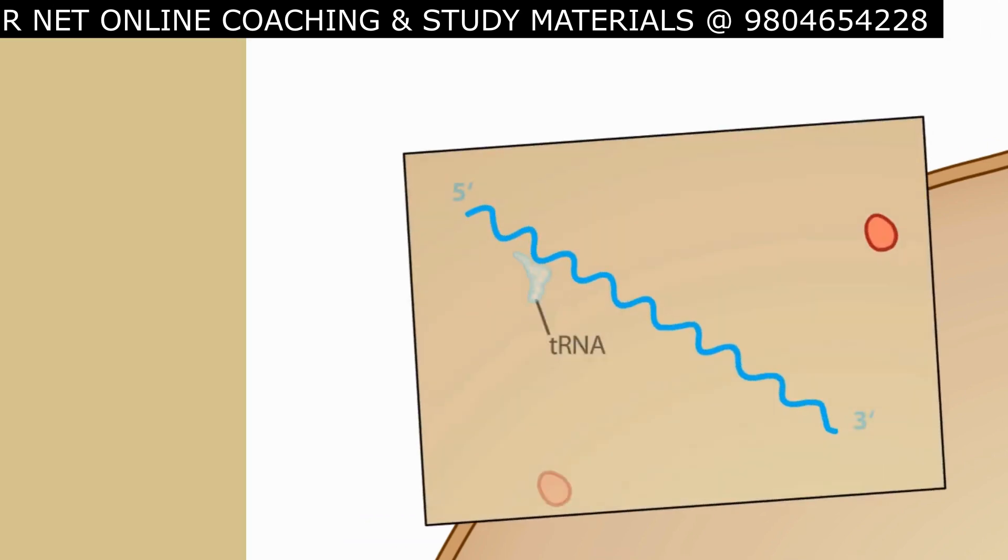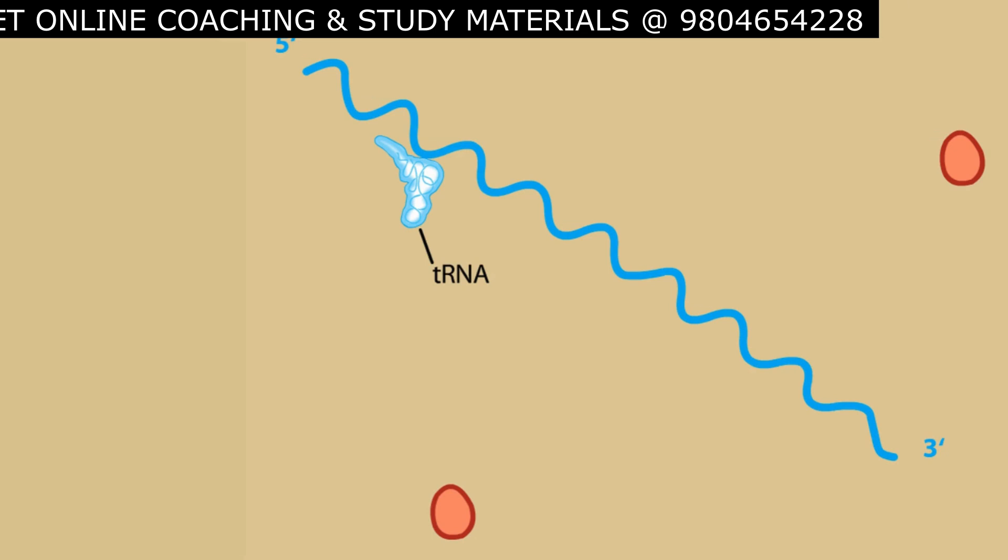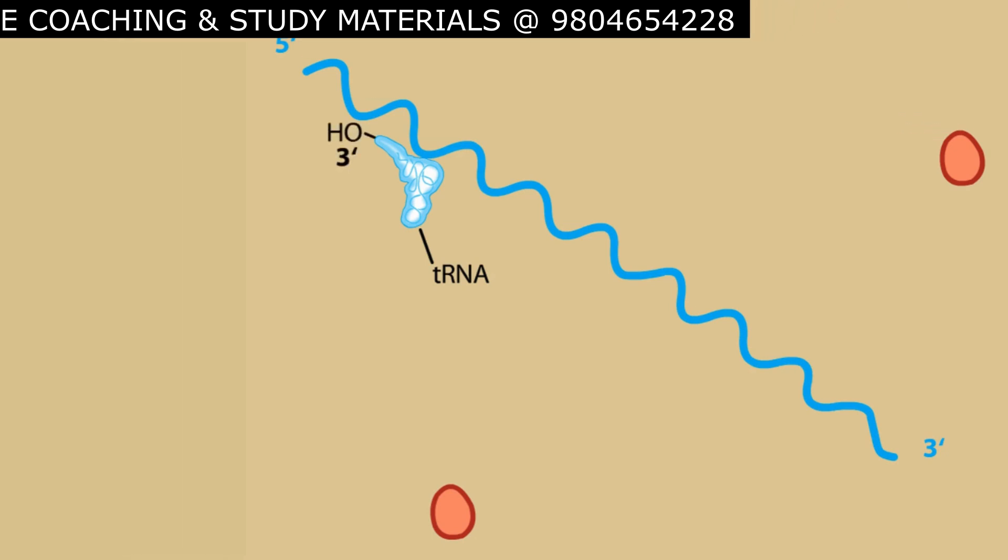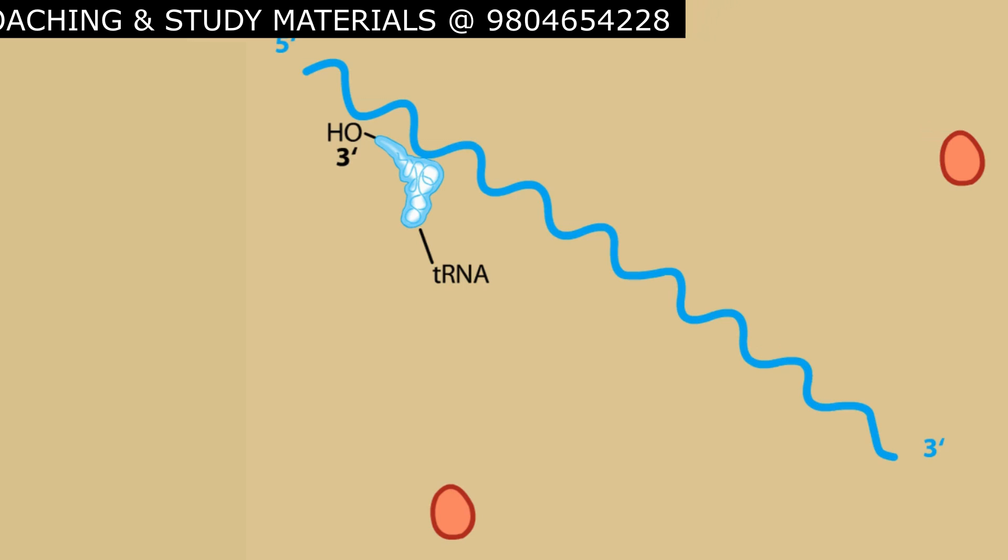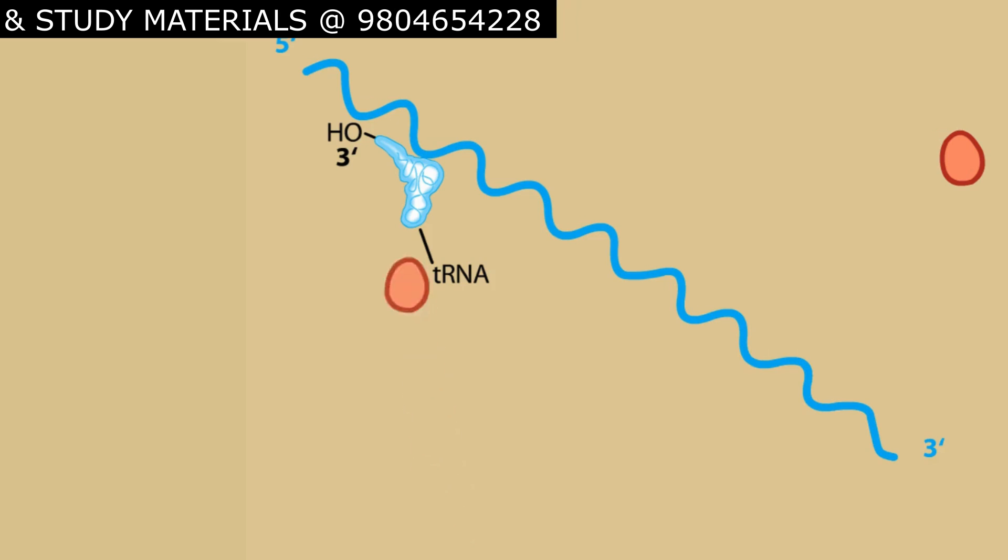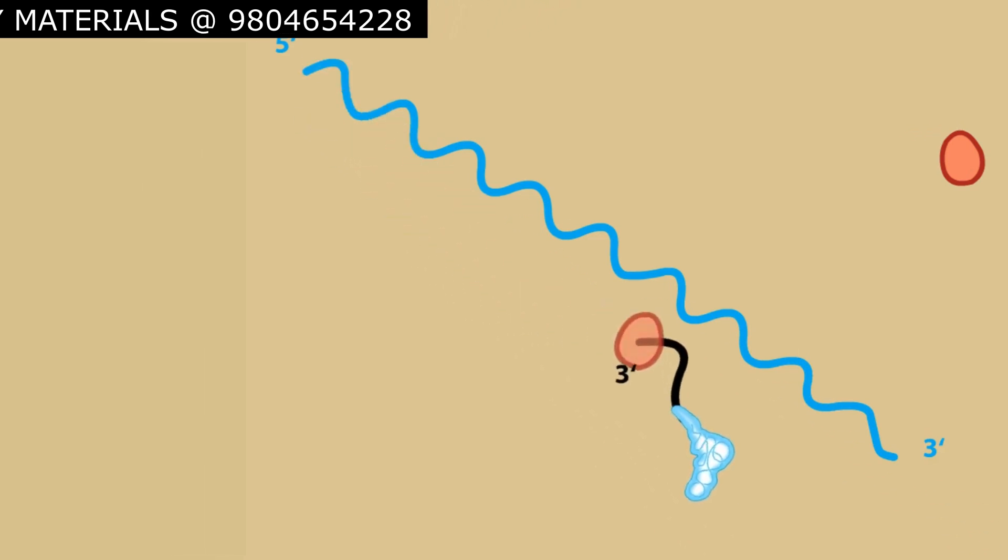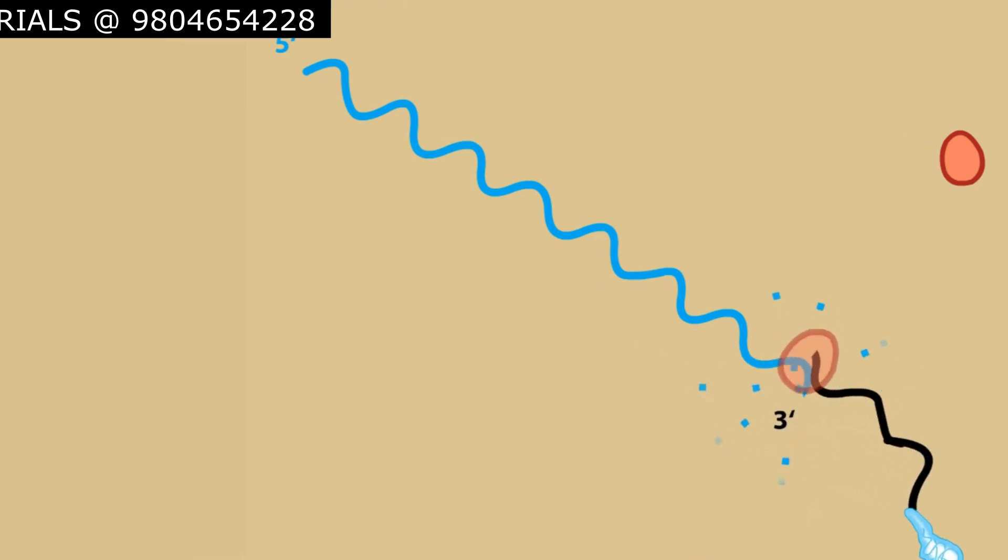A host cell's tRNA, also packaged in the virus, provides a 3' hydroxyl group necessary to prime polymerization. Reverse transcriptase uses the viral RNA genome as a template to create a DNA copy. While building the DNA strand, reverse transcriptase degrades the RNA.